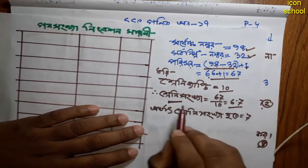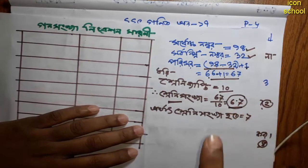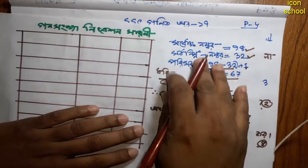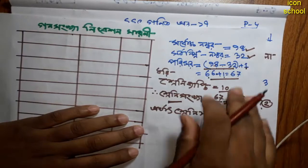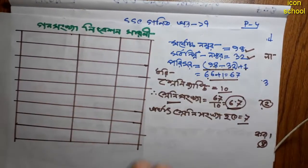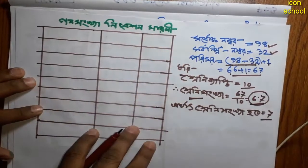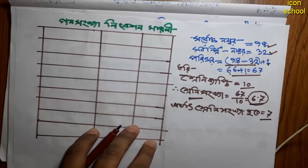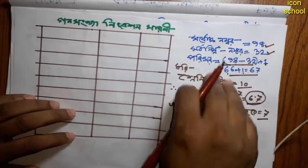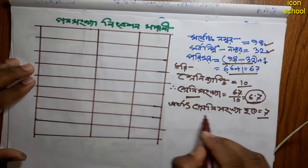If the number is 16, then the number is 16. The number is 16. Now we will see you in the next video. This is the number 16. There is a number of 30.